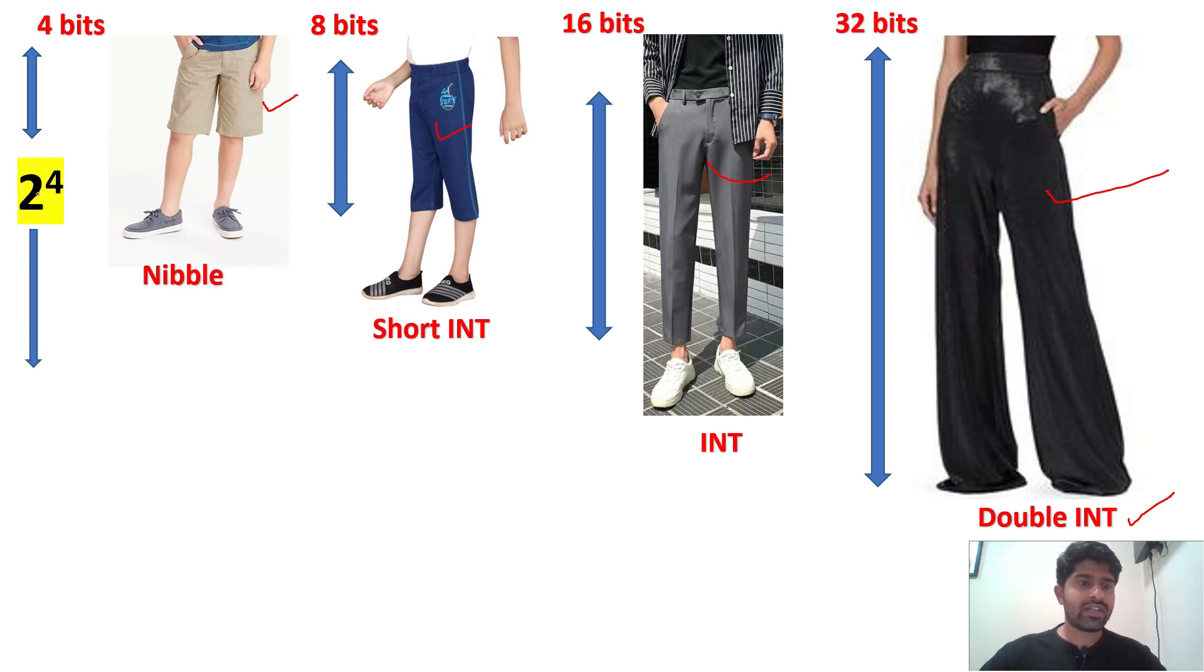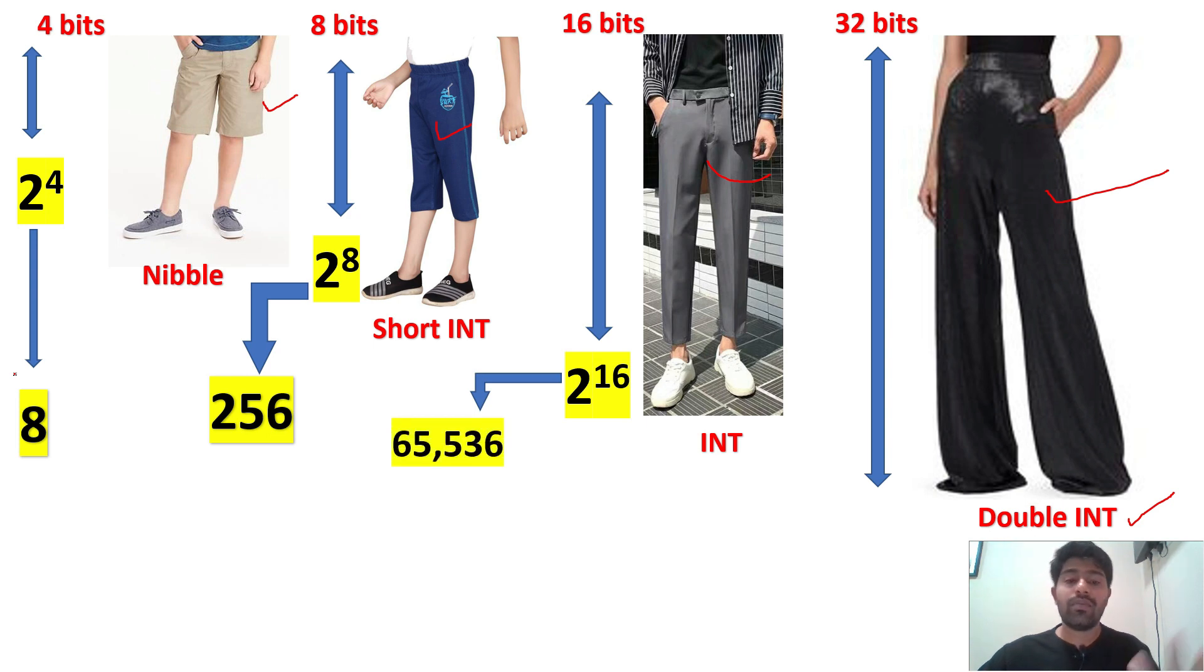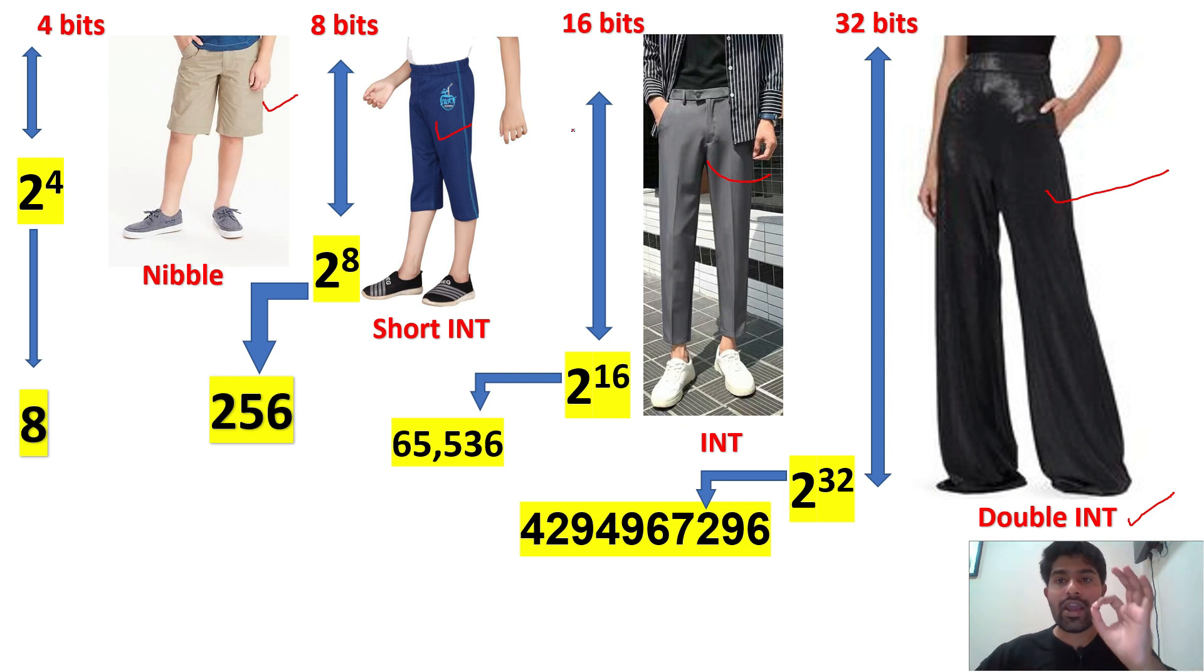Now, we will see the size. First one, it is called as the nibble for 4 bits. For 8 bits, we will called as a short int. For 16 bit, it is an int. And for the 32 bit, it is a double integer. In the 4 bits, if it means the 2 to the power 4, it can contains only value of 8. Below 8, if any value is there, I will use the nibble. If the value is more than 8 and below 256, I have to use the short int. If the values are more than 256 and below 65,000, I have to use the integer. If I am getting value more than 65 lakh, 20 lakh, 30 lakh, like that, if I am receiving any values from the field, then I have to use the double integer. So, this is very simple.